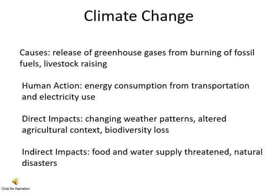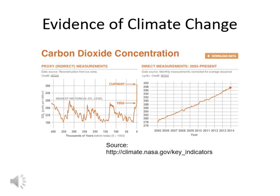Indirectly this can affect our food and water supply, as well as cause natural disasters. Although there seems to be a lot of controversy about climate change, the evidence is actually very strong that we're in a very unique time, based on data gathered by scientists — such as the ice core samples that reveal levels of carbon dioxide emissions in the atmosphere going over a period of 400,000 years. As you can see in this particular graph, the current level exceeds anything in the last 400,000 years. This all coincides with the Industrial Revolution.